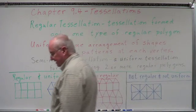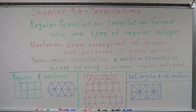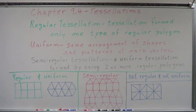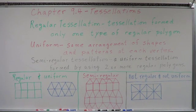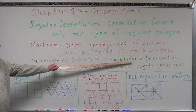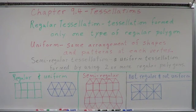Definitions and words you need to know. Tessellation: a pattern that covers a plane by transforming the same figure or set of figures so that there are no overlapping or empty spaces. Regular tessellation: formed by only one type of regular polygon — a polygon with all sides of equal measure and all equal angle measurements. Uniform: has the same arrangement of shapes and patterns at each vertex. Semi-regular tessellation: a uniform tessellation formed by using two or more regular polygons.